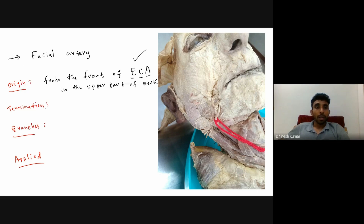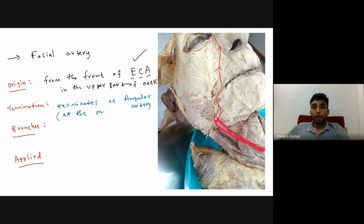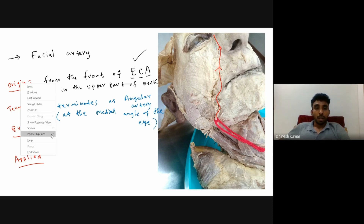The facial artery has a tortuous course. It runs lateral to the angle of the mouth, then lateral to the nose, and finally terminates at the medial angle of the eye as the angular artery — named because it is present at the medial angle of the eye.